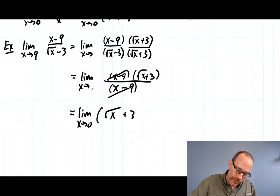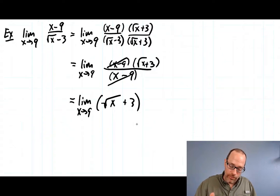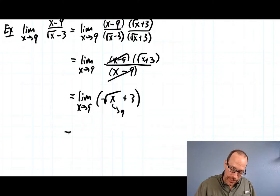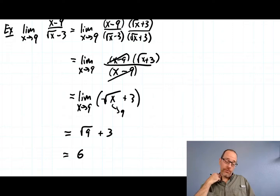If x is converging to 9, then √x is converging to √9, which is 3. And the 3 is just 3. So it's 3 + 3 = 6. That was a more complicated one. We couldn't see the answer at first, but we did some tricks and eventually the answer became apparent.